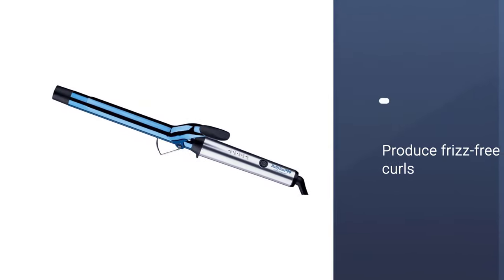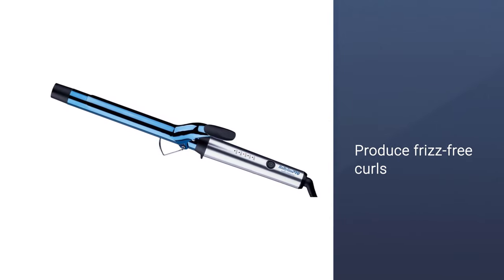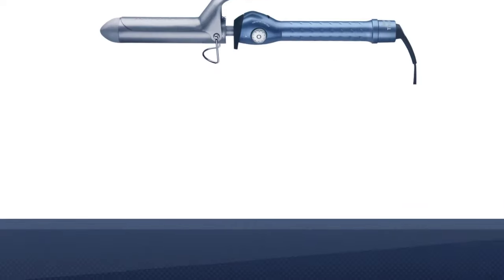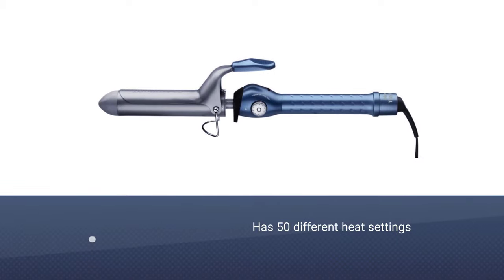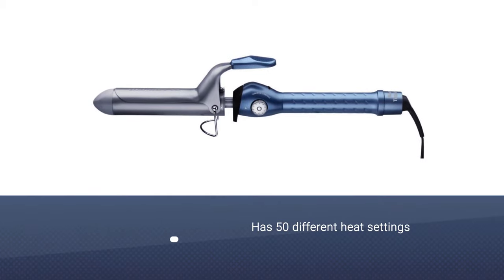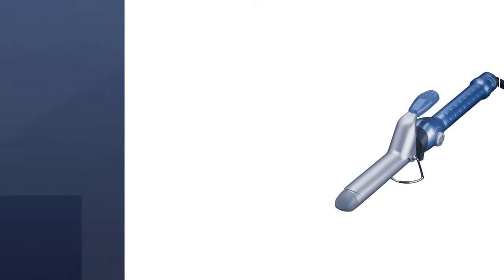The 1.25 inch curling iron has 50 different heat settings to choose from and heats up to 450 degrees Fahrenheit. It is one of the most popular curling irons on Amazon.